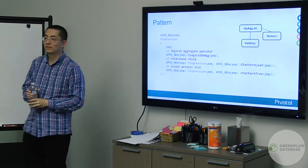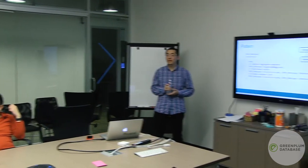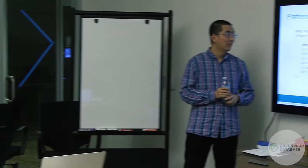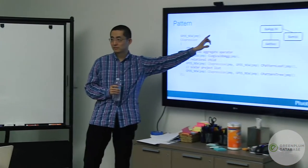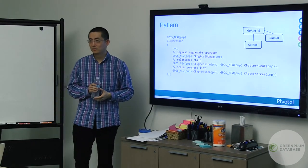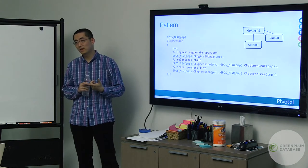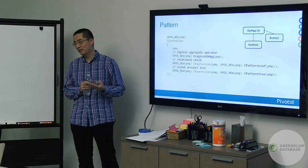A question came in asking how many types of aggregation we have and what the difference is. The types include sum, average, standard deviation, min, max. We also have stream aggregation and hash aggregation as physical operators.